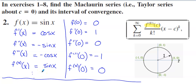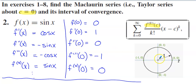Now we need to evaluate these derivatives at where the series is based. Our series is a Maclaurin series, based at zero, so we toss zero in for x. Using the unit circle, at angle zero, cosine is one and sine is zero. So the function evaluated at zero gives zero, and the first derivative — cosine of zero — gives one.